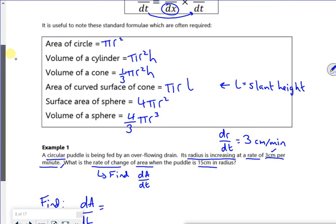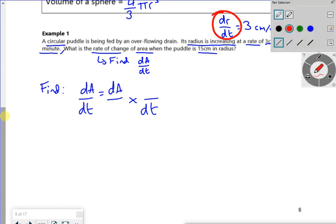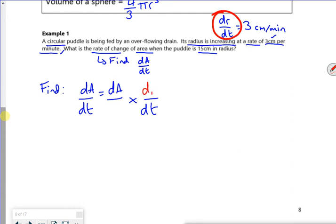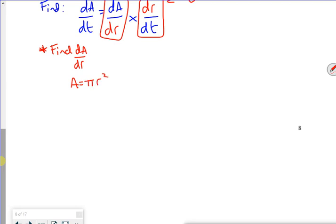So I want to find dA by dt. I'm going to use this idea up here of splitting it up. So it's a dA over something times by something over dt. And if you look at the information you've given in the question, it's dr by dt there. So that must be dA by dr there. So this dr by dt, I've got. That's 3.